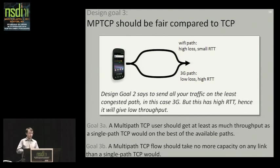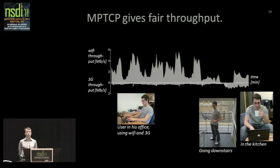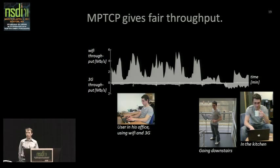Let me walk through a concrete example. This is Costin, one of the co-authors, running multipath TCP on a laptop with a Wi-Fi interface and a 3G interface. The graph shows time on the x-axis from 0 to 12 minutes. On the positive y-axis is throughput on Wi-Fi, and on the negative y-axis is throughput on 3G — so the total shaded area is his total throughput. For the first eight minutes he's sitting in his office. At eight minutes he goes downstairs for coffee, the Wi-Fi signal gets poor in the staircase and eventually cuts out, but his flow survives on 3G. He reaches the kitchen and acquires a new Wi-Fi base station, and his flow just persists happily.